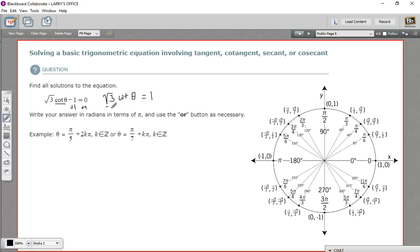And then we just divide by the square root of 3 here. And we get the cotangent of theta equals 1 over the square root of 3.